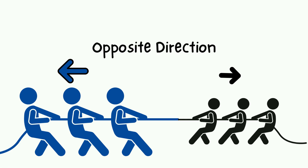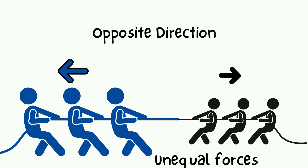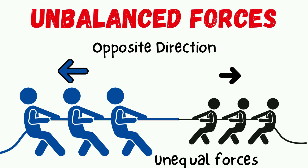Let's have another tug of war contest. The forces are in opposite directions since the blue team is going to the left and the black team is going to the right. They show unequal forces because the blue team has bigger and stronger participants compared to the black team. This means they showed unbalanced forces because their forces are in opposite directions and they exerted unequal forces.